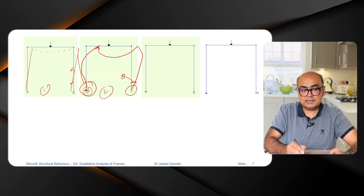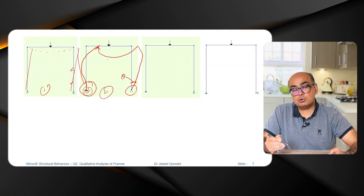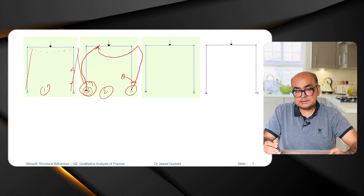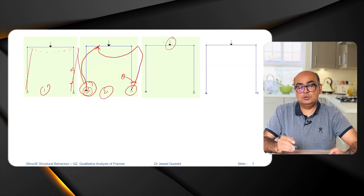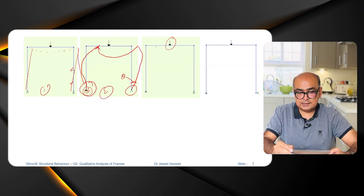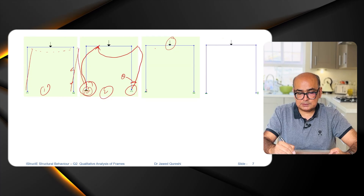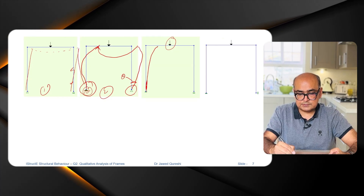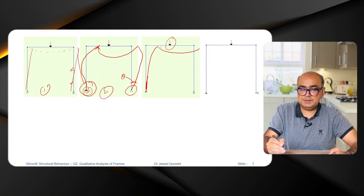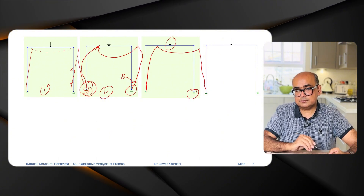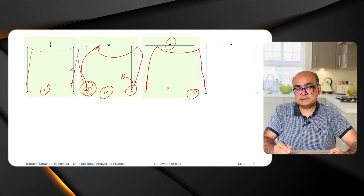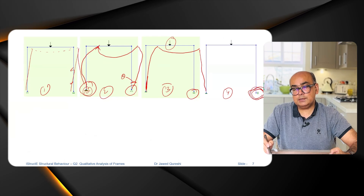Understanding the second case will also help me to draw its bending moment diagram. For the third case, the downward load causes deflection. Because we have fixity on the left, the frame is going to move in that direction, and then you will have deflection in the beam going to the right side because we have a roller on the right.